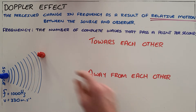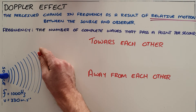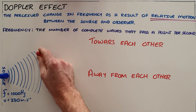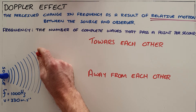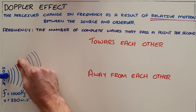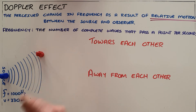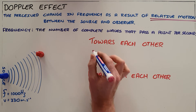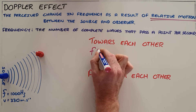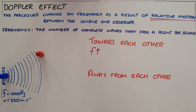When they are moving towards each other, instead of allowing those waves to reach the observer at the same rate as they left the source, by moving towards the source the number of waves per second increases. So we say that the observed frequency is higher than the emitted frequency.